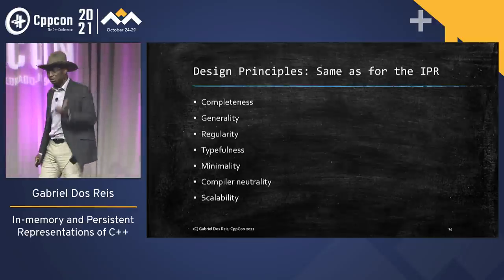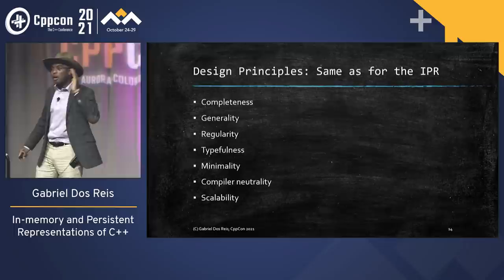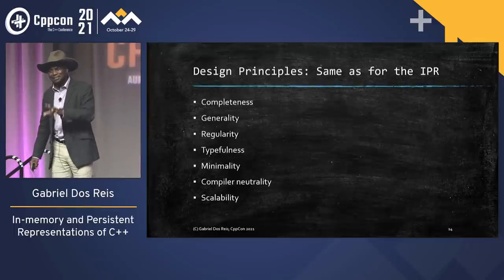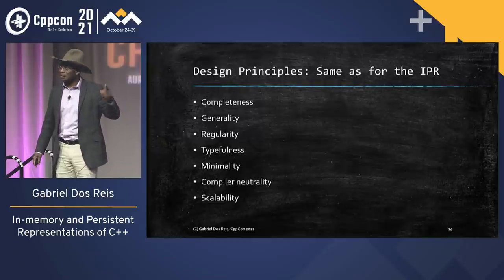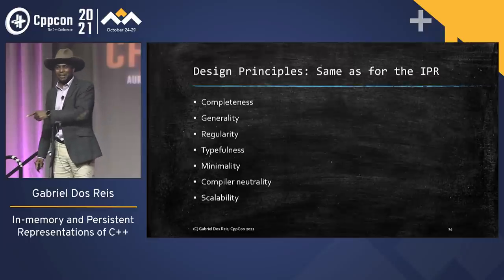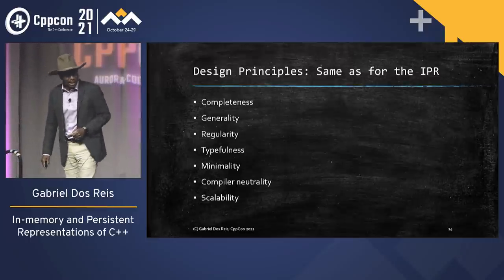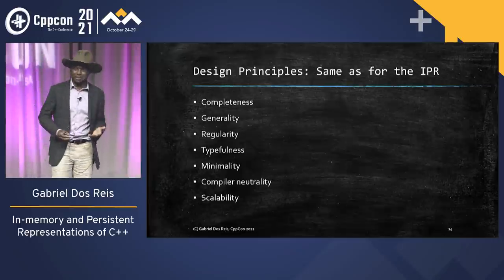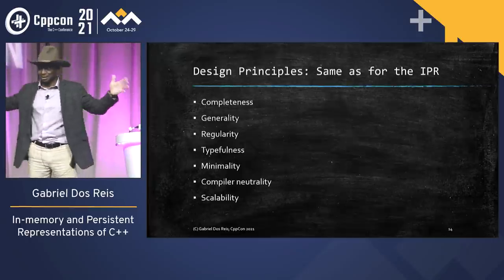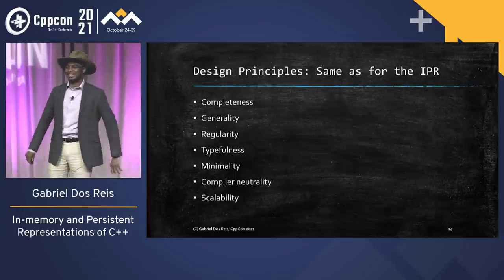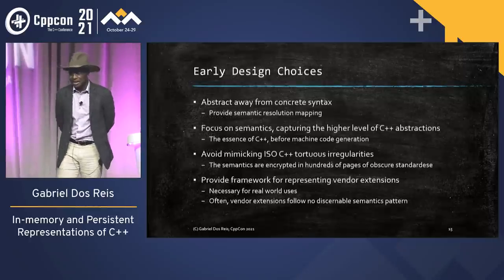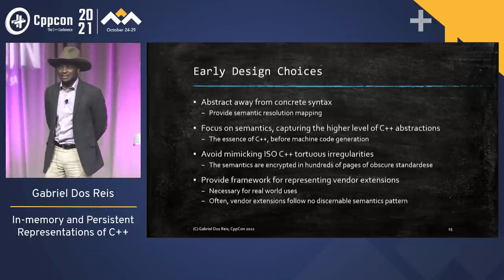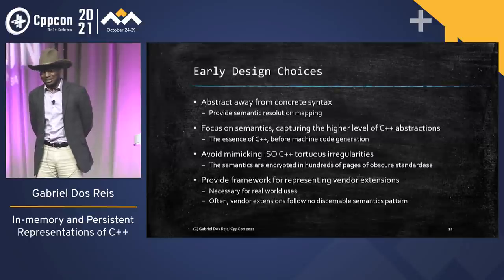The same principles apply: completeness, generality, regularity, minimality, compiler neutrality, and scalability. Even though I was designing this for the MSVC compiler, I said: no, this needs to be compiler neutral, because it's only a matter of time before I need something like this with a different compiler. If you want to compile stuff on Windows, for example, the Windows source code base is huge, so it has to be scalable. And of course: abstract away from the concrete syntax.